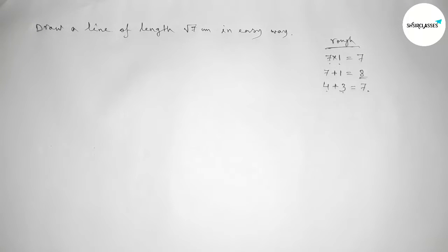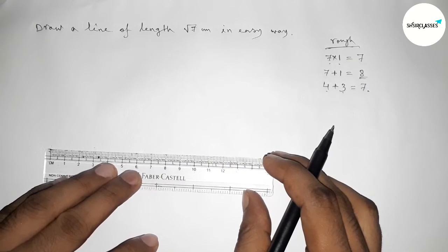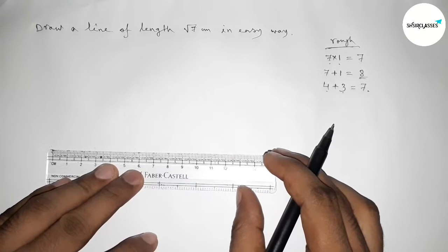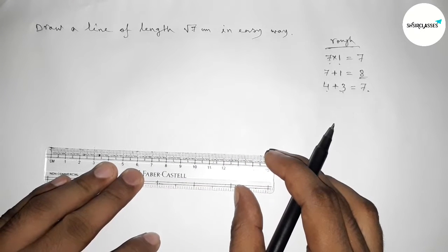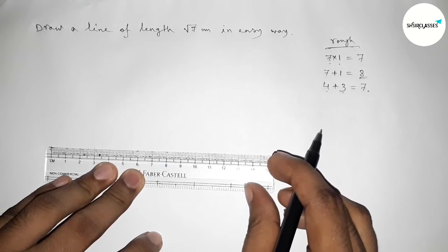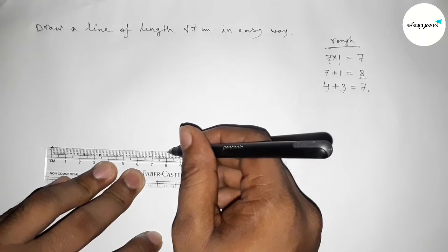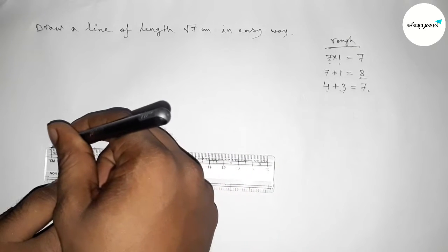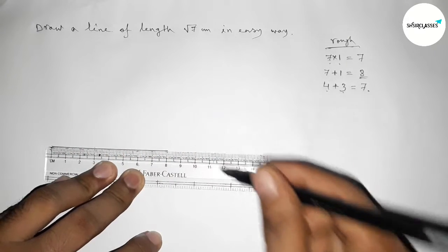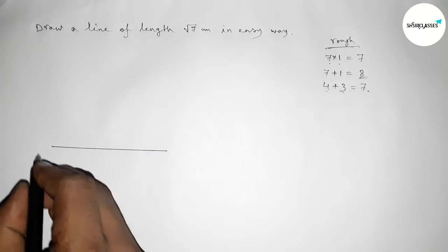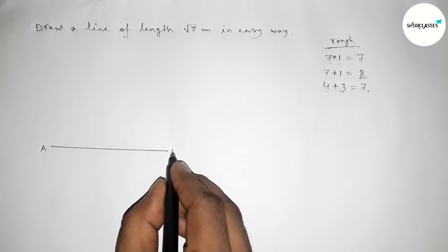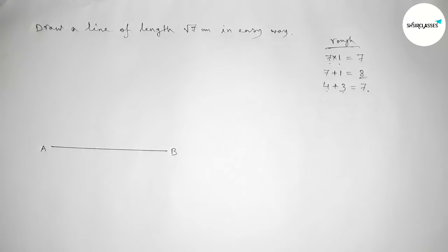Here I'm going to draw a line of length 8 centimeter. This is the 8 centimeter line. Now taking point A at one end and point B at the other end, so AB equals 8 centimeter. Next we will bisect AB.